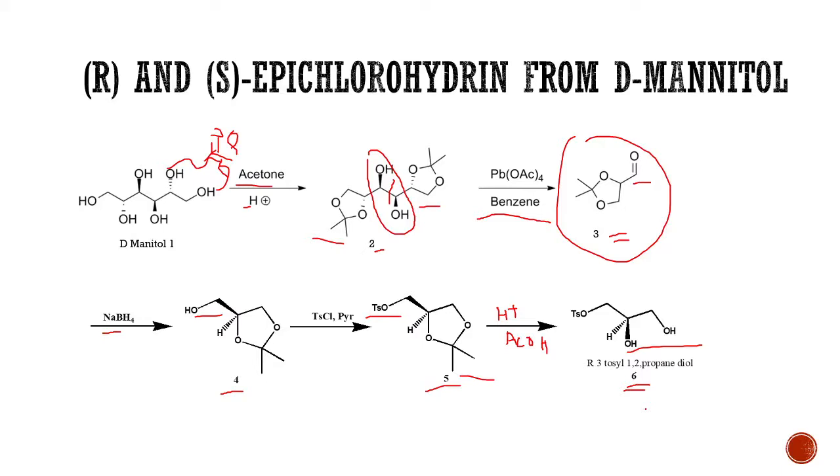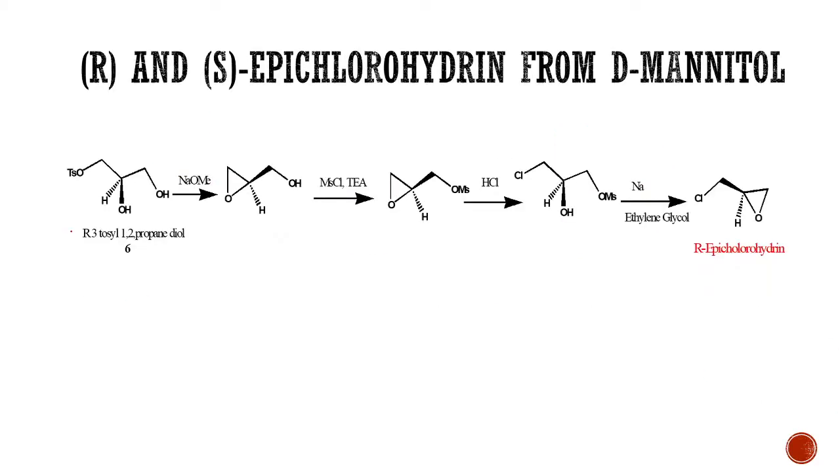Let's see how this compound number 6 is utilized for the formation of R and S-epichlorohydrin. We have R-3-tosyl-1,2-propanediol, so this is 1, 2, 3, so 3-tosyl-1,2-propanediol. This is R, as you can see, first priority, second priority, third priority, and fourth priority.